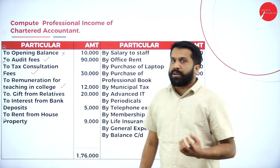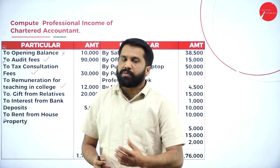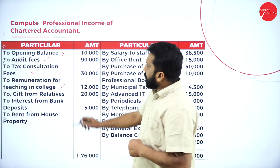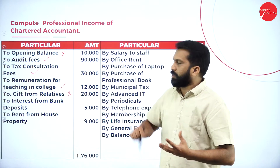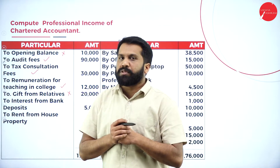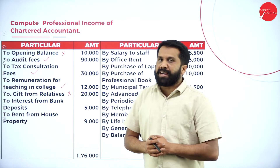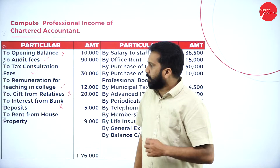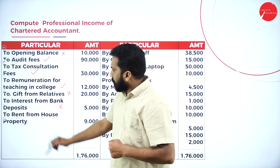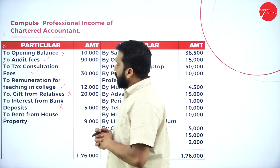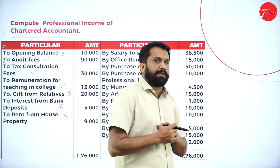Even though you are a chartered accountant, there is a certain number of hours per month you are permitted to take classes in college. Gift from relatives — if the gift is from your client, you are supposed to take it; if from relatives, you are not supposed to take it. Interest from bank deposit is not part of your profession — it comes under income from other source. Rent from house property is called income from house property, never income from your profession.